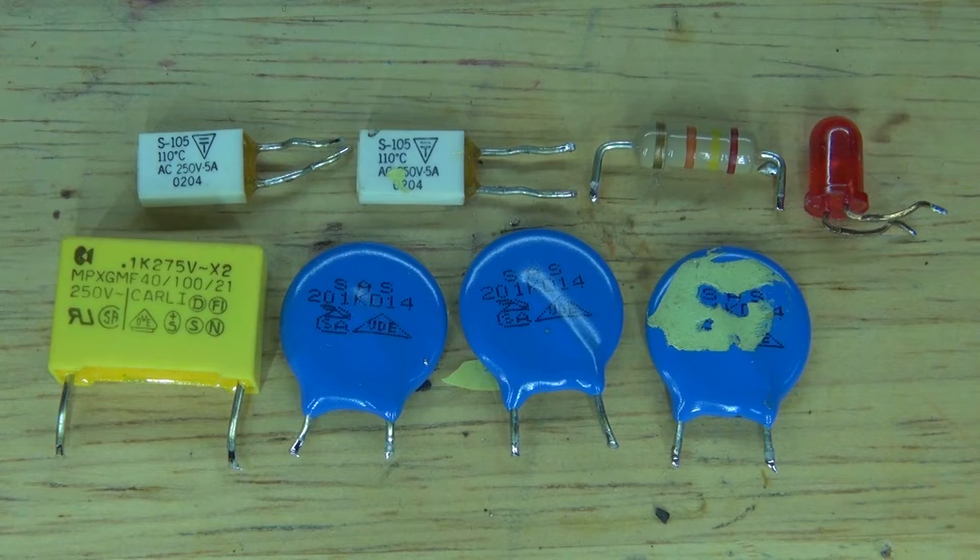And these are all of the components that I've salvaged. The yellow square component on the bottom left is a Carly 0.47 microfarad polypropylene film capacitor with a max voltage input of 250 volts AC. And these blue ceramic high voltage capacitors can handle up to 200 kilovolts. And the two white capacitors on the top left are polyester capacitors with a max voltage of 250 volts AC with 5 amps. Both very interesting capacitors that could potentially be useful.